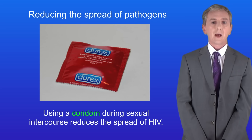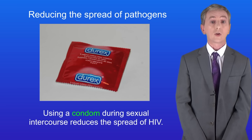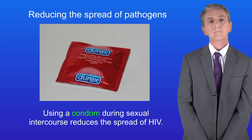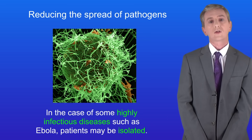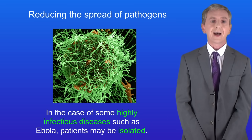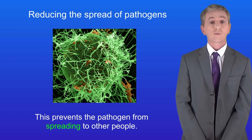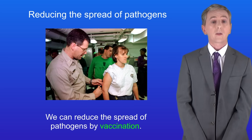Another way of reducing the spread of pathogens is to reduce direct contact between individuals — for example, using a condom during sexual intercourse reduces the spread of HIV. In the case of some highly infectious diseases such as Ebola, patients may be isolated, which prevents the pathogen from spreading to other people. And lastly, we can reduce the spread of pathogens by vaccination, which we'll look at in more detail in a later video.